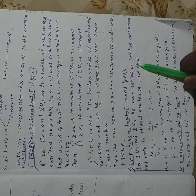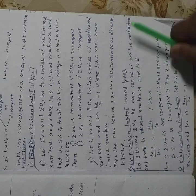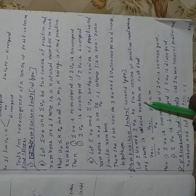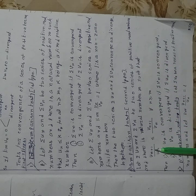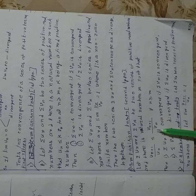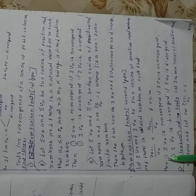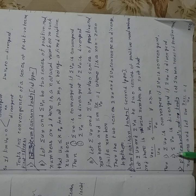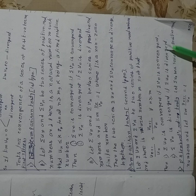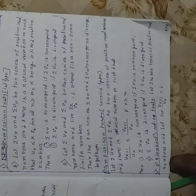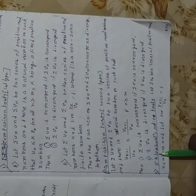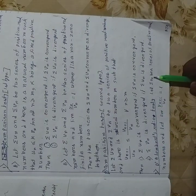Type 3: Let summation of u_n and summation of v_n be two series of positive real numbers, and there exists a natural number m such that u_{n+1} / u_n ≤ v_{n+1} / v_n for all n ≥ m. Then summation of u_n is convergent if summation of v_n is convergent, and summation of v_n is divergent if summation of u_n is divergent.